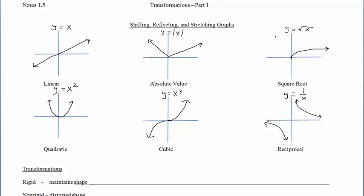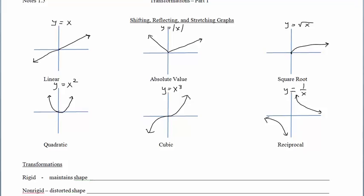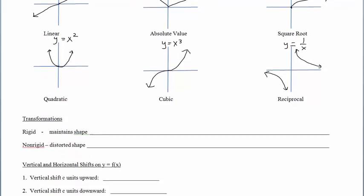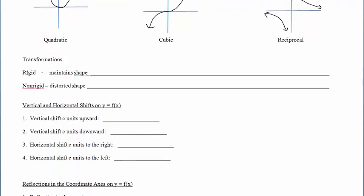We need to get some language down about transformations. A rigid transformation applied to the parent function maintains the basic shape — the original shape — of the graph. So if you think about the different things you can do that wouldn't distort the graph, that would maintain the shape, that would be your shifts.